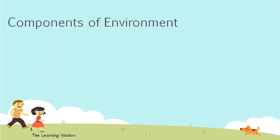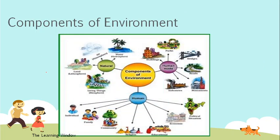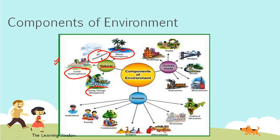Moving on, we have the components of environment. This is a picture from the NCERT textbook which divides the environment into three parts. The first one is natural — in natural environment you have air (atmosphere), water (hydrosphere), land (lithosphere), and living things.